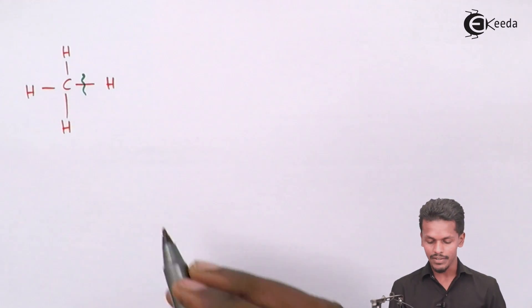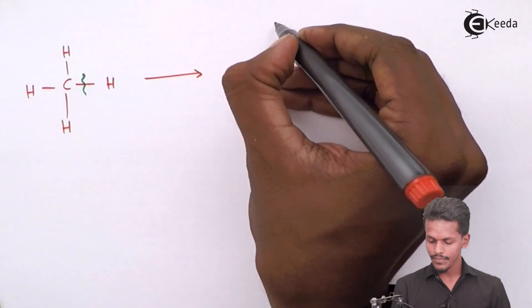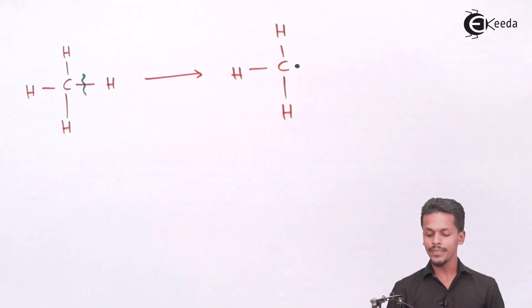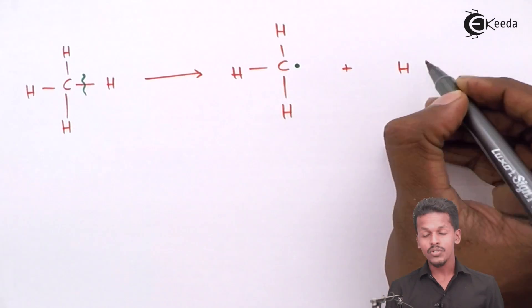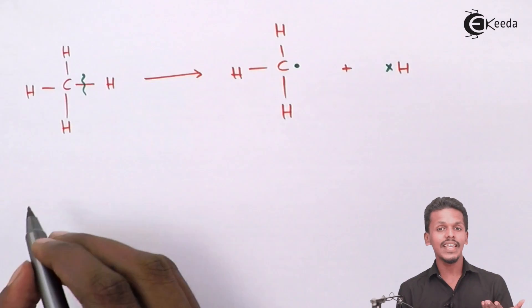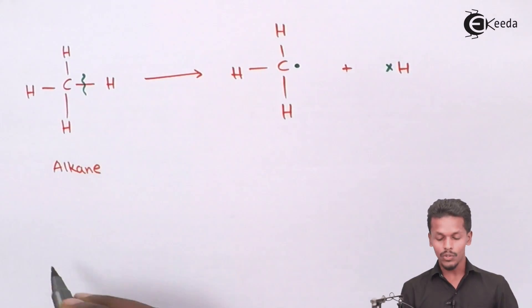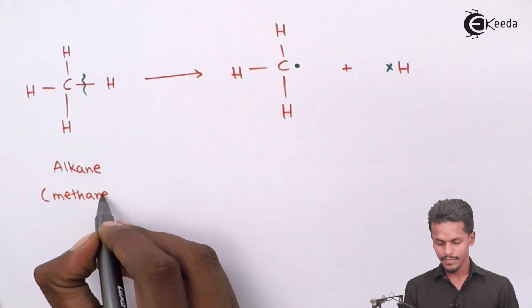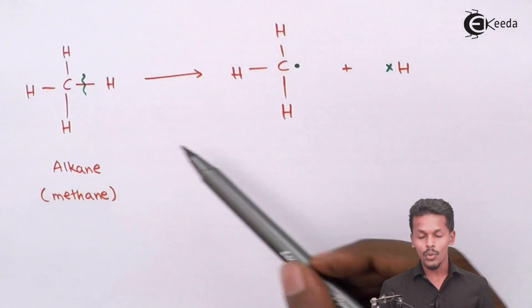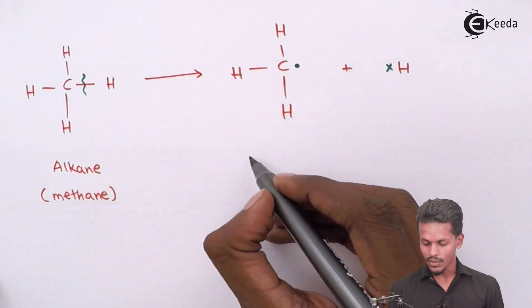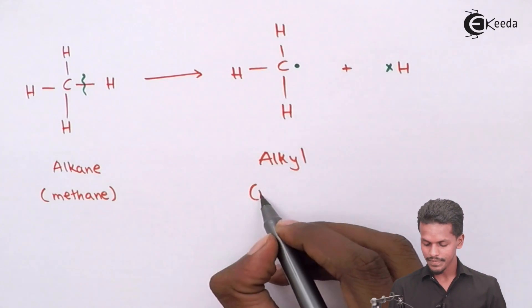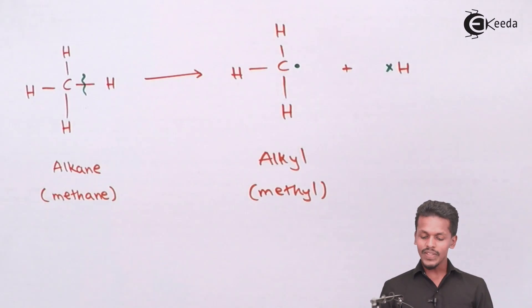Suppose they break in this manner. The carbon now has one electron of its own and the hydrogen also has its electron. This is the alkane known as methane. But as we can see, because there is only one hydrogen atom less in the whole alkane, this will be called an alkyl group — specifically, methyl. So this is a methyl radical.